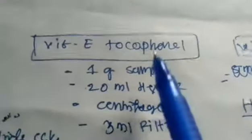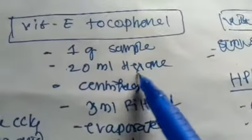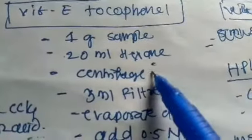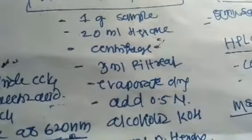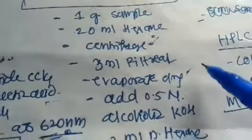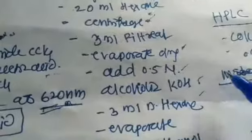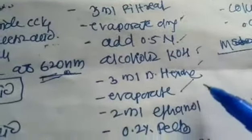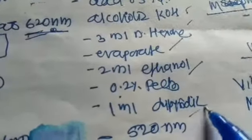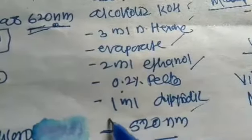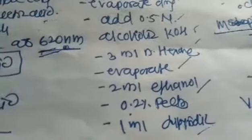For estimation of vitamin E, also known as tocopherol, take 1 gram of sample and 20 ml of hexane, then centrifuge and filter it. Take 3 ml of filtrate and evaporate. After dryness, add 0.5 N alcoholic KOH and again 3 ml hexane and evaporate. Then add 2 ml ethanol, 0.2% FeCl3, and 1 ml dipyridyl. Check the absorbance at 520 nanometers with reference to standard.